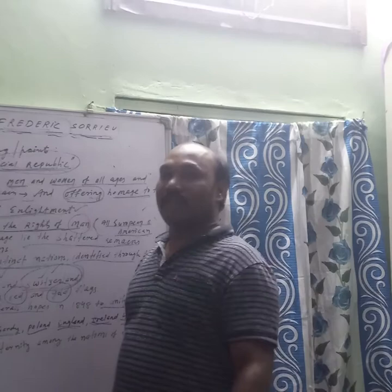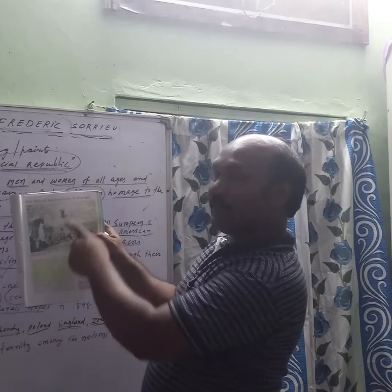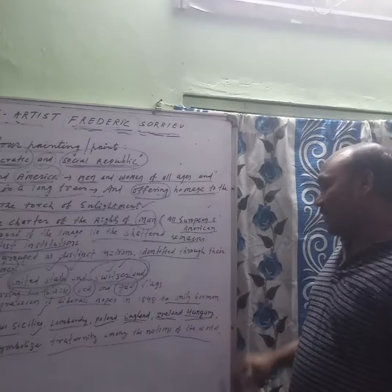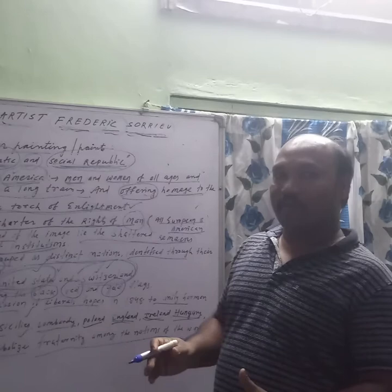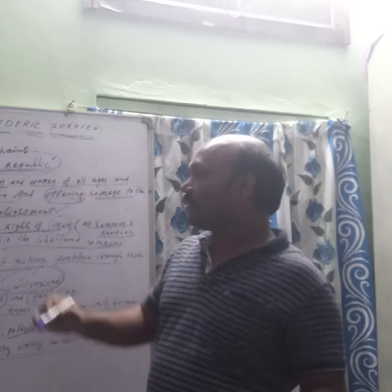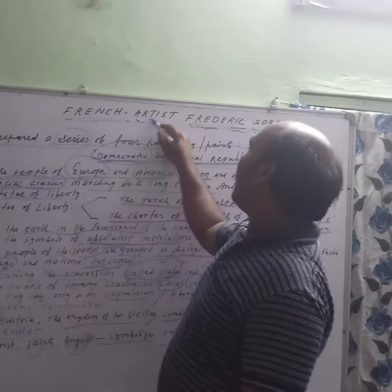Lastly, in the fourth image, you can see Christ, saints, and angels. This picture symbolizes fraternity among the nations of the world. It means that what the peoples are doing, God also approves and blesses them to do so. This is the whole idea of the image prepared by artist Frédéric Sorrieu during 1848 — or we can say, in the image of 'Democratic and Social Republic,' these ideas come out.